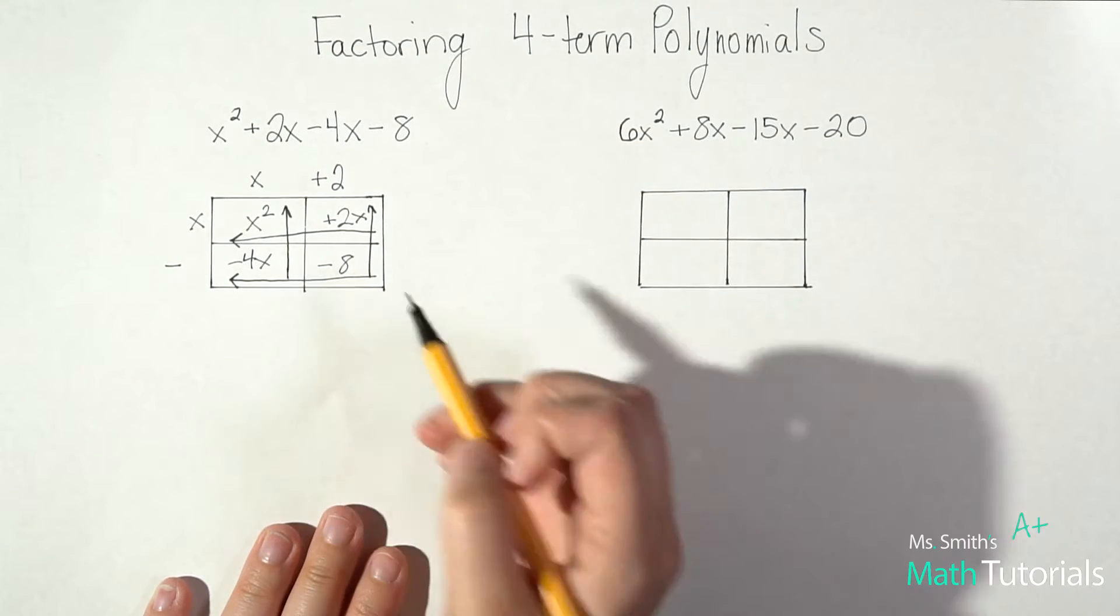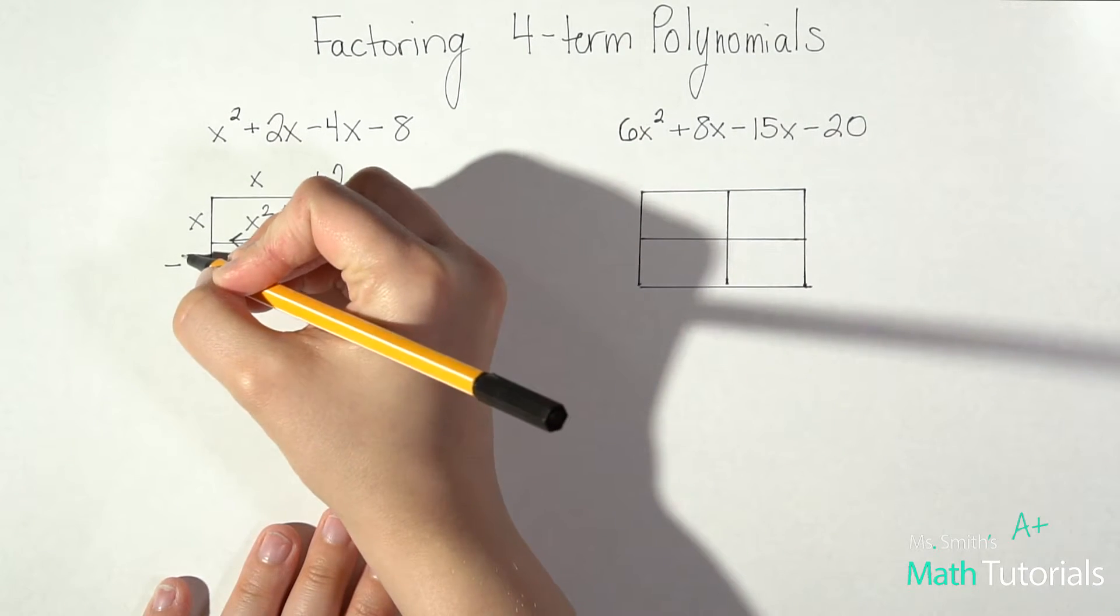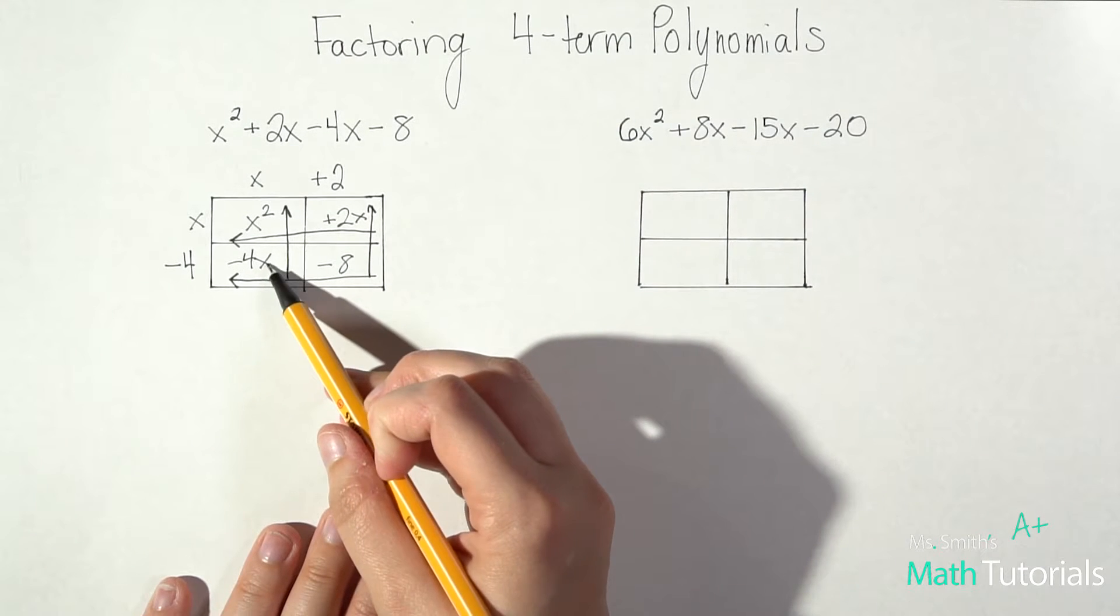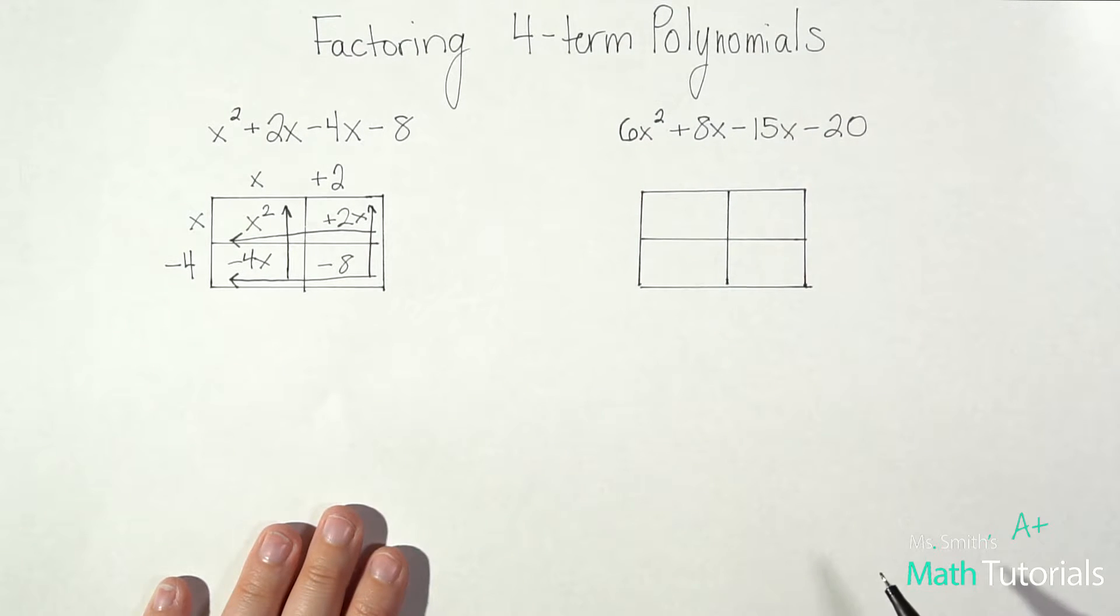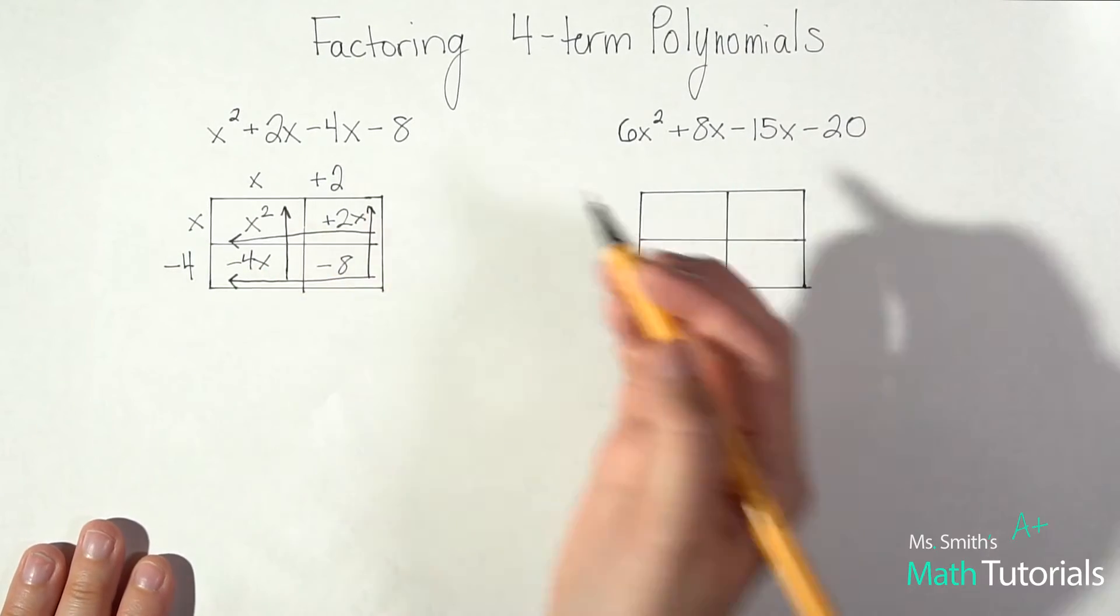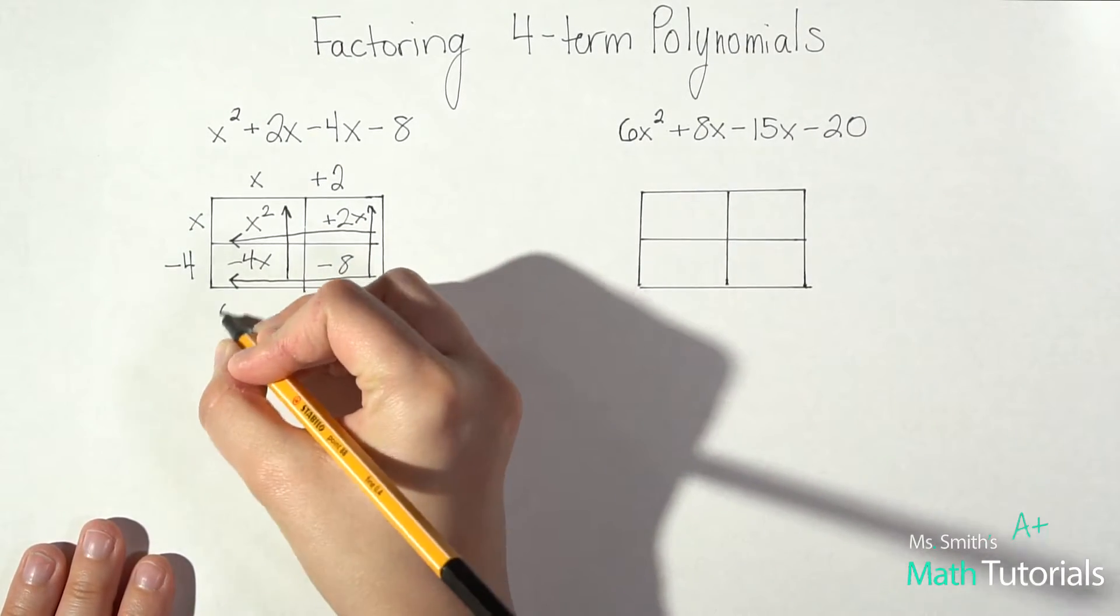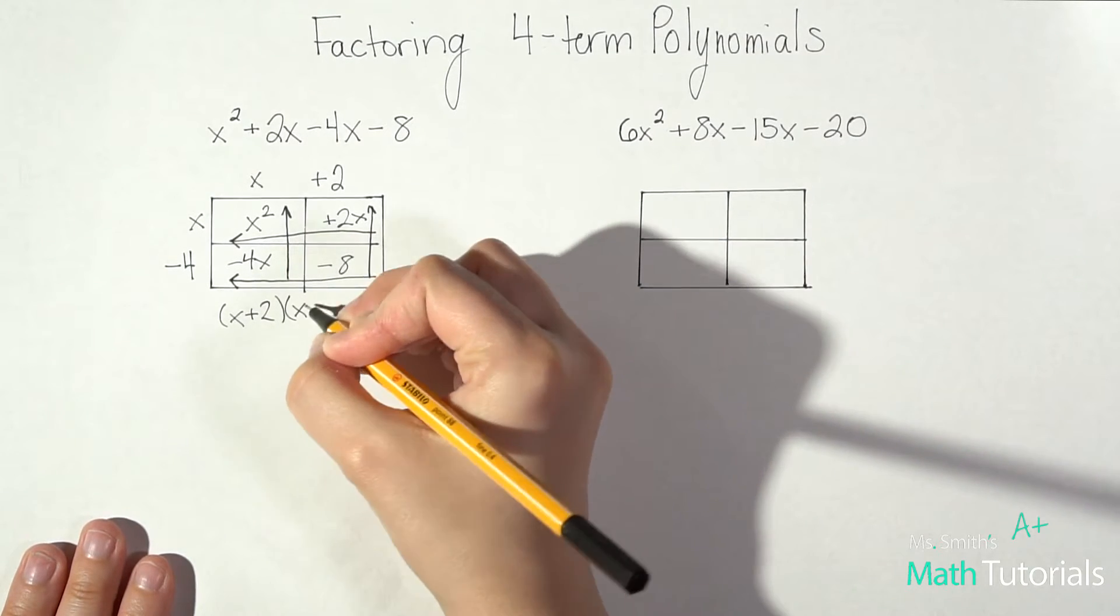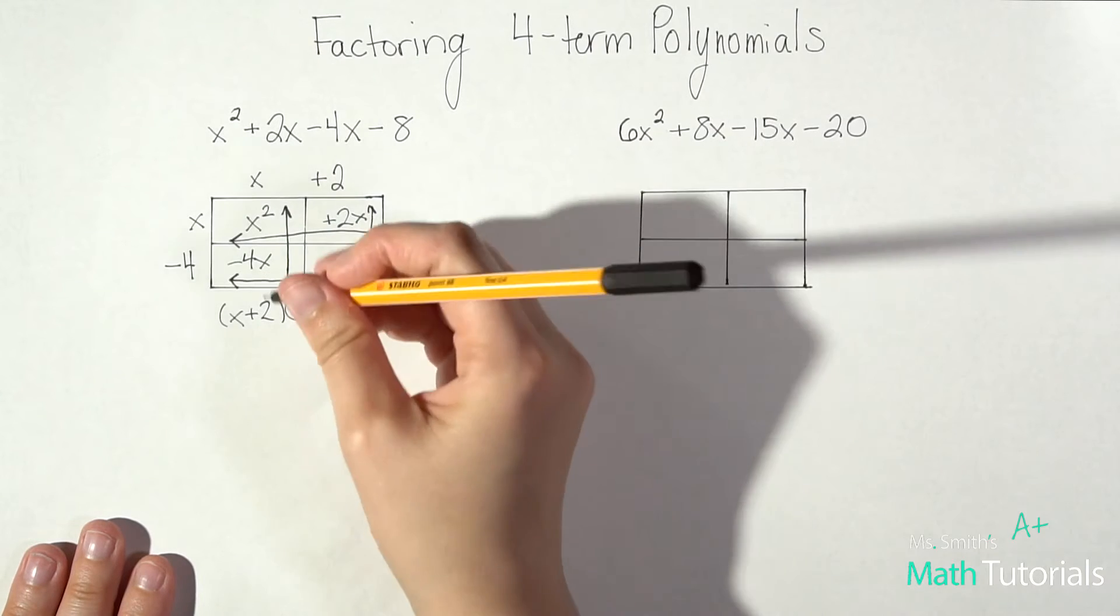And between 4 and 8 it's definitely going to be a 4 coming out. That's their GCF. I can't pull an x out because even though there's one there, there's not one there. So these are my two binomials. So I've got my one on the top x plus 2 and my one on the side x minus 4. That's it. That's my answer.